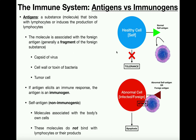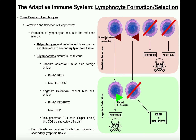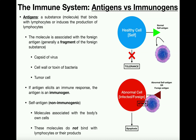In this video, we're going to differentiate between two terms which tend to be kind of confusing in the topic of the immune system, and those are antigens and immunogens. Once we understand the difference between antigens and immunogens, we'll talk about the lymphocyte formation and selection process, which is going to involve positive selection and negative selection. But first we need to understand what antigens are and what immunogens are.